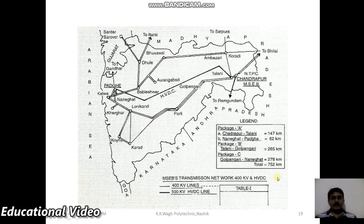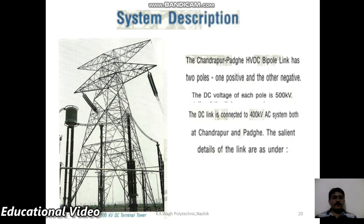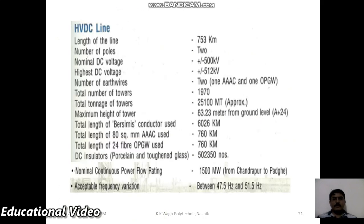This graph shows the HVDC system in Maharashtra state and how it is transmitted to different states and districts. The specifications: HVDC has two poles — positive and negative — with each pole voltage of 500 kV, and the receiving end has 400 kV AC. The detailed structure has a distance of 753 km, two poles at plus or minus 500 kV DC, approximately 1970 towers, a total distance of 760 km, and a power handling capacity of 1500 MW.